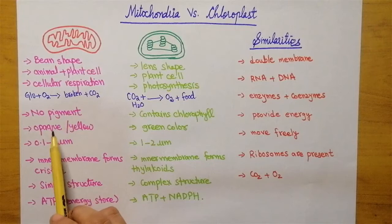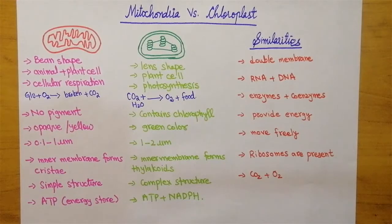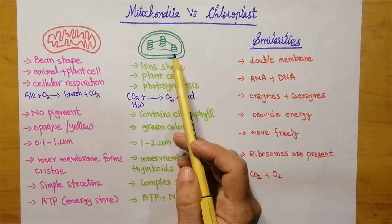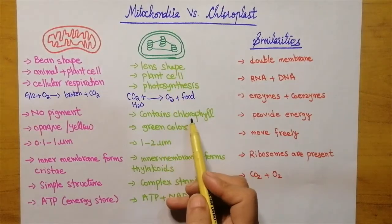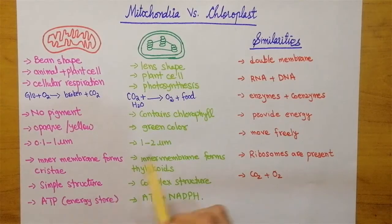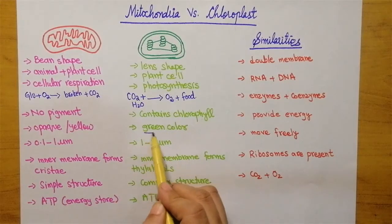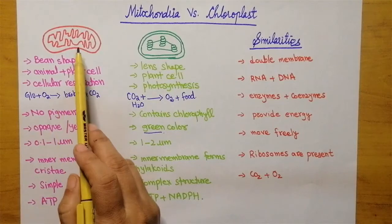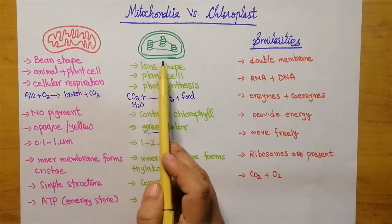In the case of mitochondria, no pigment is present. Because of the absence of pigments, its color may be opaque, light yellow, or colorless under the microscope. While in the case of chloroplast, it contains chlorophyll. We know that leaves are green in color, and that green color is because of the presence of chlorophyll — this chlorophyll gives the green color.